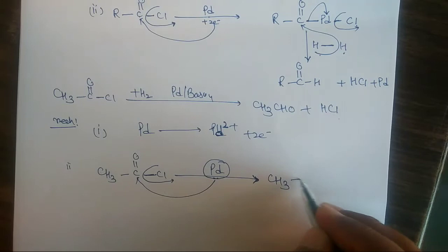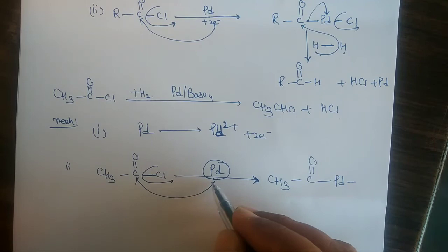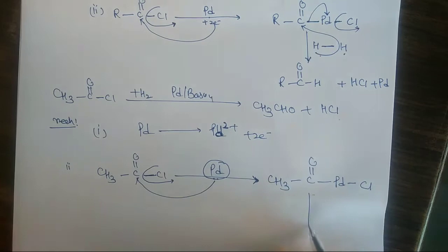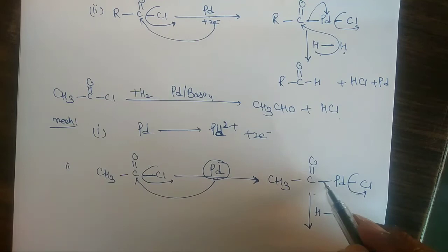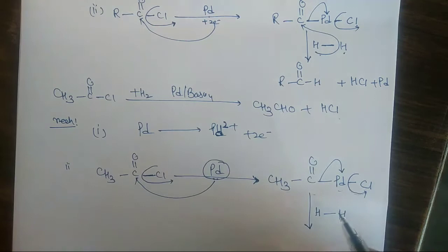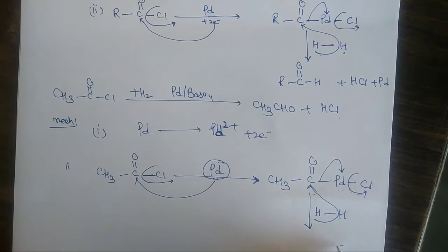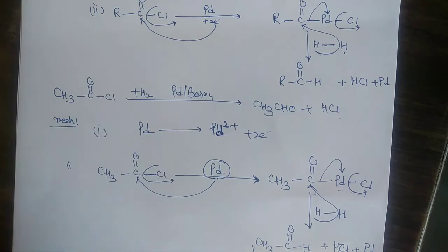CH₃ C double bond O forms a carbon-Platinum bond, and Platinum becomes positive. After that, we add hydrogen. Cl is electronegative and H is positive, therefore they form HCl. Platinum is recovered as such, and what we get is CH₃ C double bond O and H — this is acetaldehyde. So this is the method of preparation of aldehyde by the Rosenmund reaction.